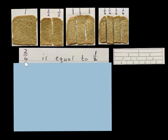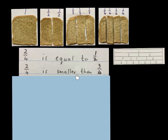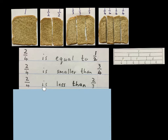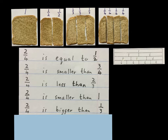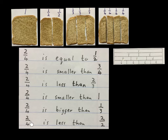Now let's compare two quarters to its friends. Two quarters is equal to a half. Two quarters is smaller than three quarters. The next one says: two quarters is less than two thirds. The two quarters is less than the two thirds. The next statement: two quarters is smaller than one — the two quarters we have is smaller than the whole one. Two quarters is bigger than a third. We already said the two quarters is a half, so you can start comparing everything now. The last statement says: two quarters is less than two halves, which is a whole.